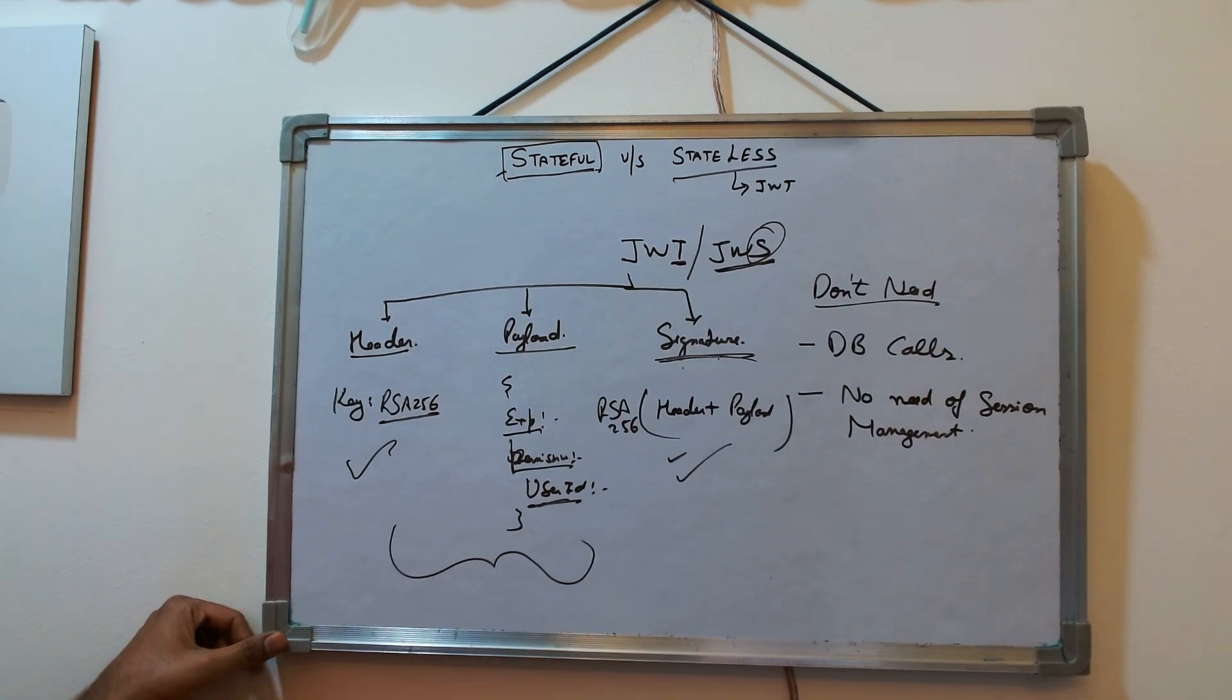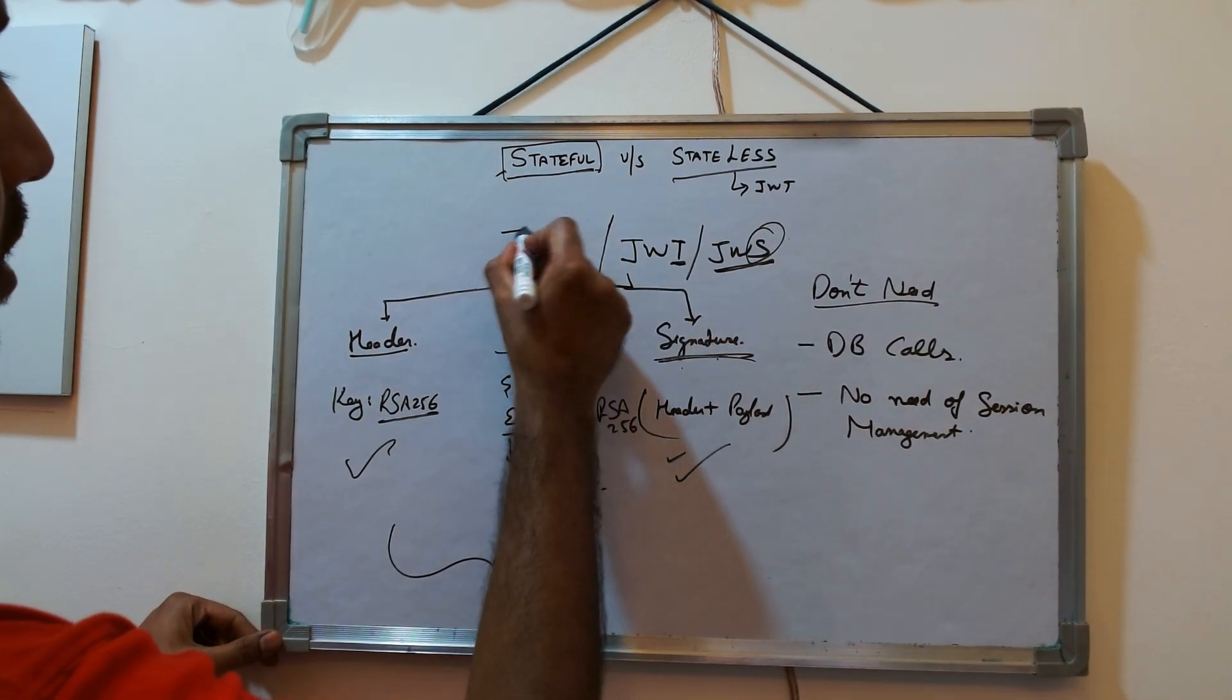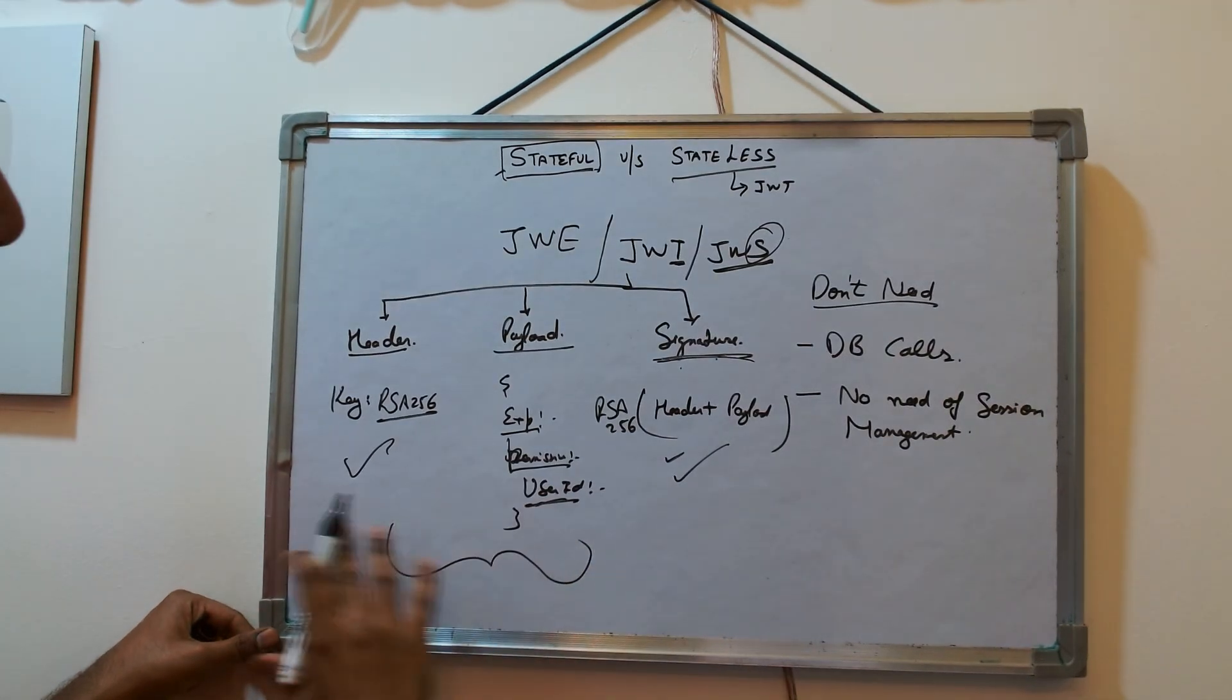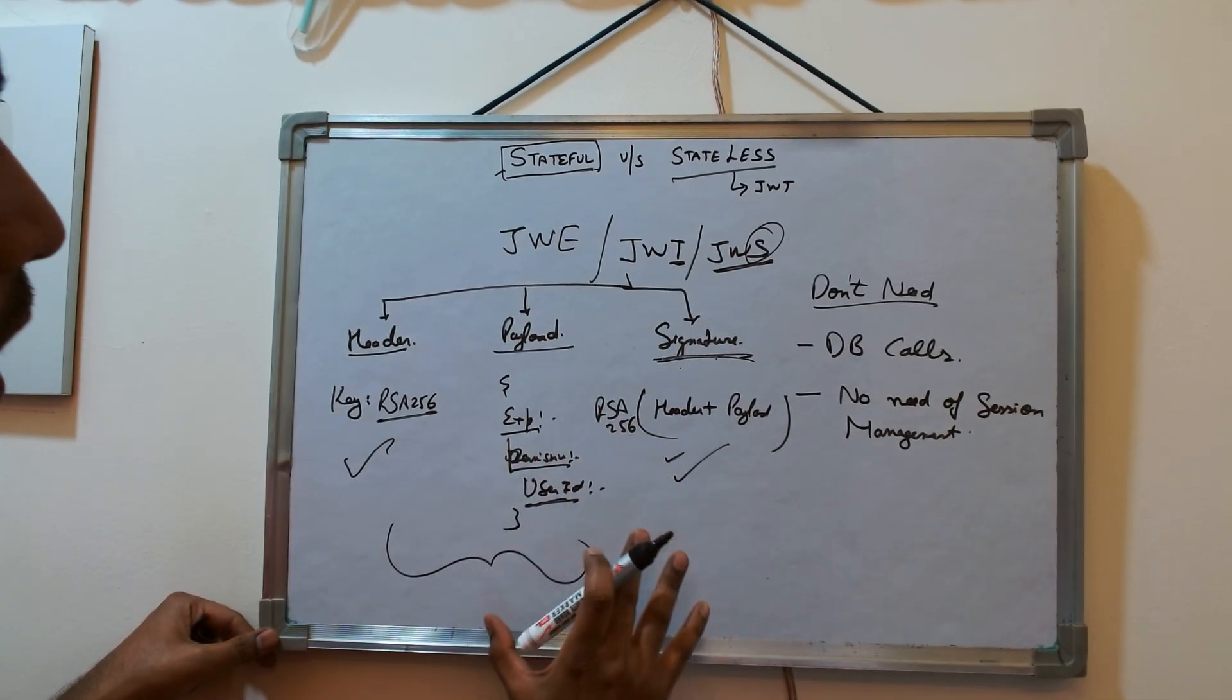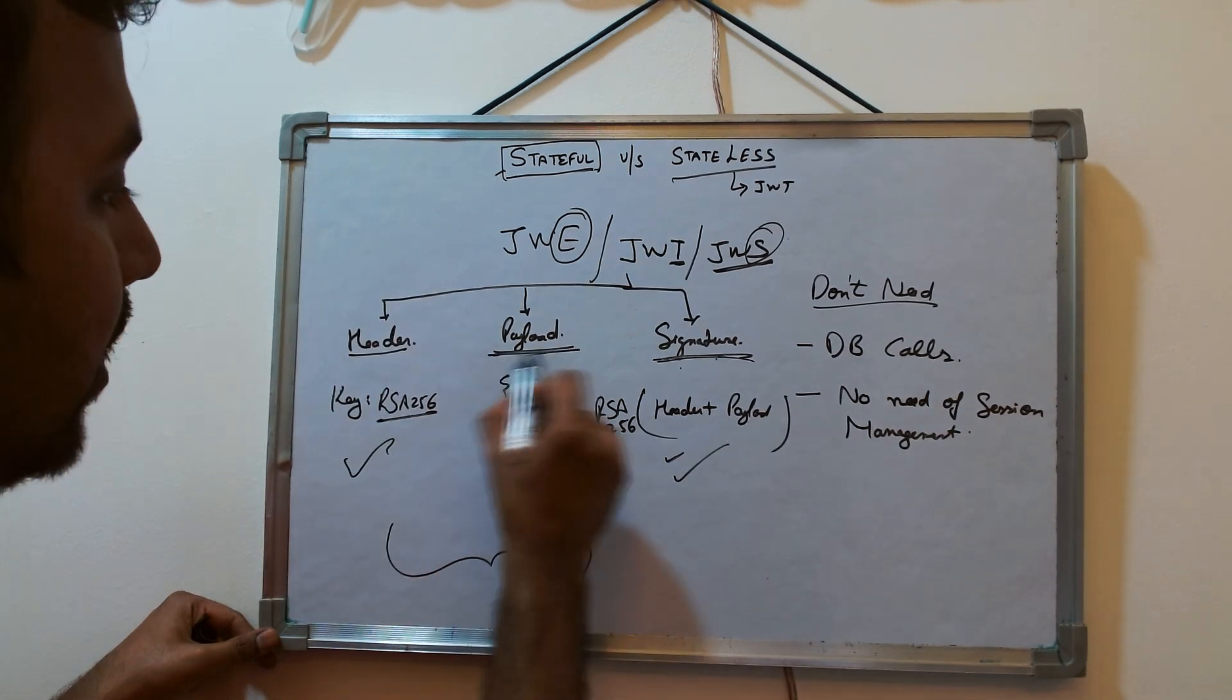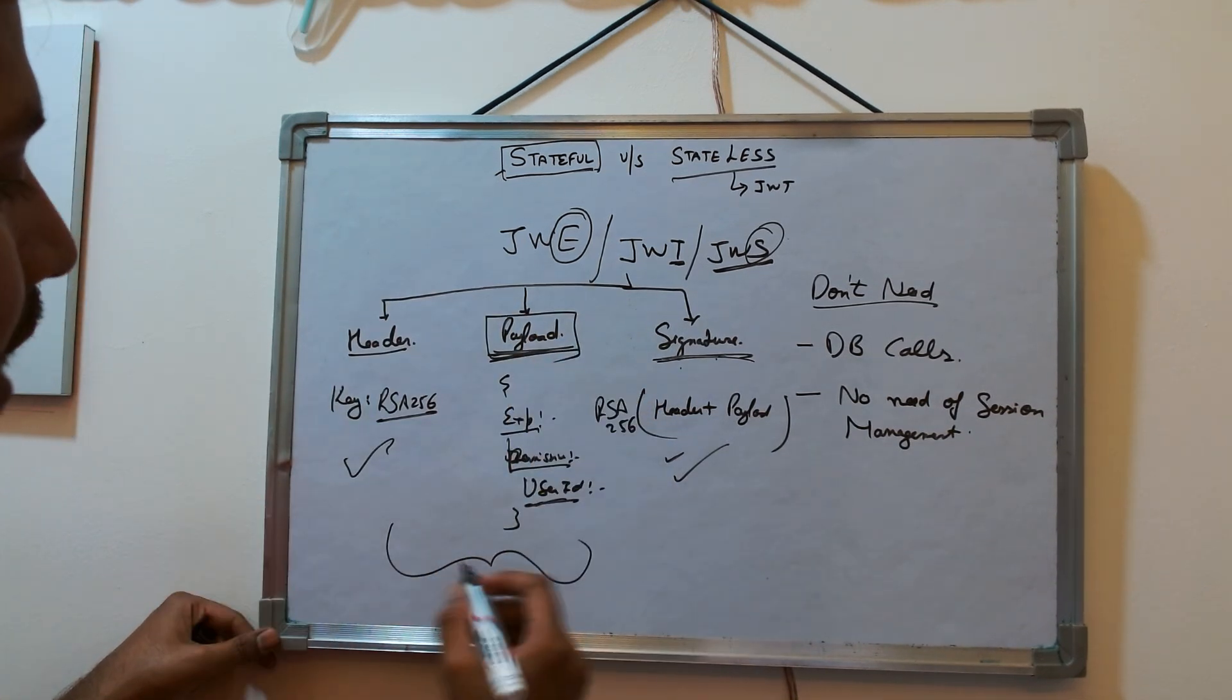S is nothing but we are doing a signature. There is one more thing JWE. So here if you see that this data is not encrypted at all. So if you want encryption also in the JWT, this payload gets encrypted.